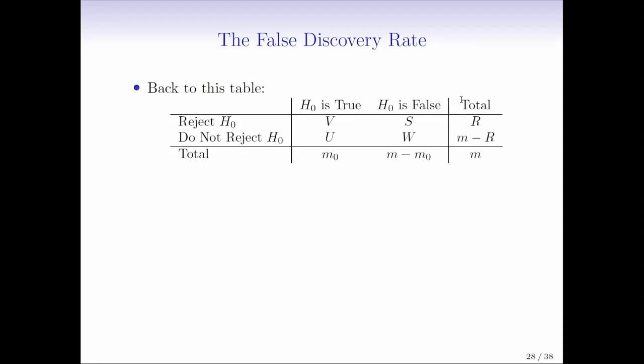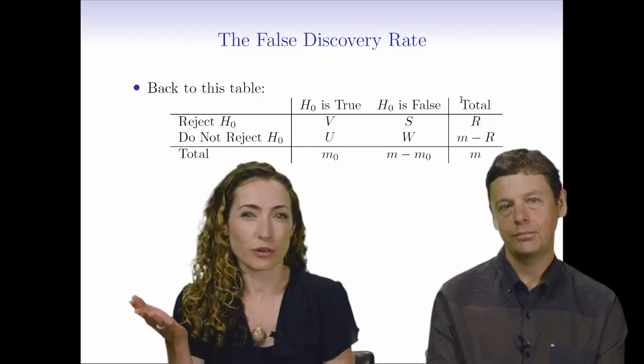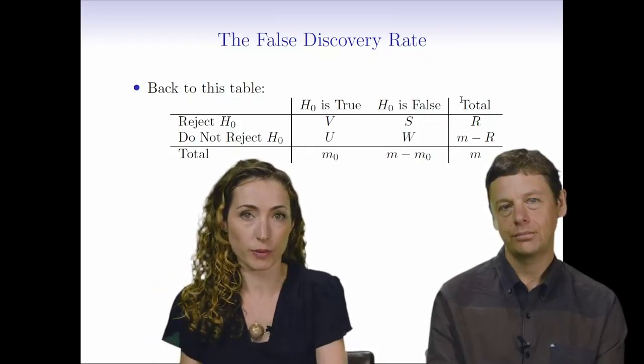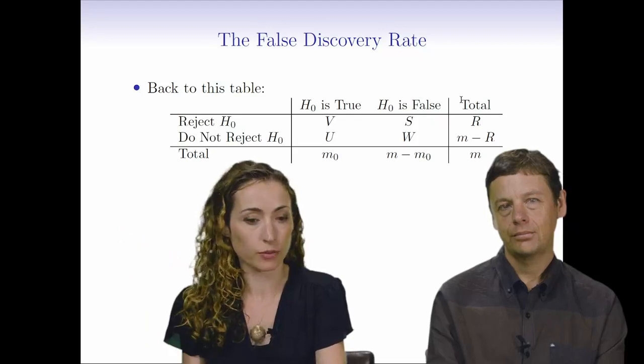It goes back to this table where this corresponds to the possible outcomes for M hypothesis tests that we've conducted. We can control which row we're in because we know how many hypotheses we've rejected and how many we haven't rejected. But we don't ever know what the values in the columns are because the columns correspond to the ground truth, which of course we don't have access to.